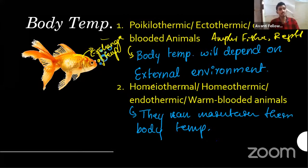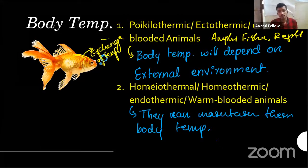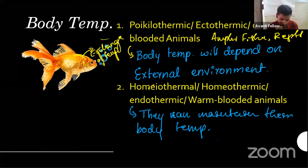Higher or larger organisms have the ability to do that because they can store and maintain energy. Smaller organisms do not have that ability. Warm-blooded examples: birds and mammals are the best examples. Humans are mammals, so they are warm-blooded.